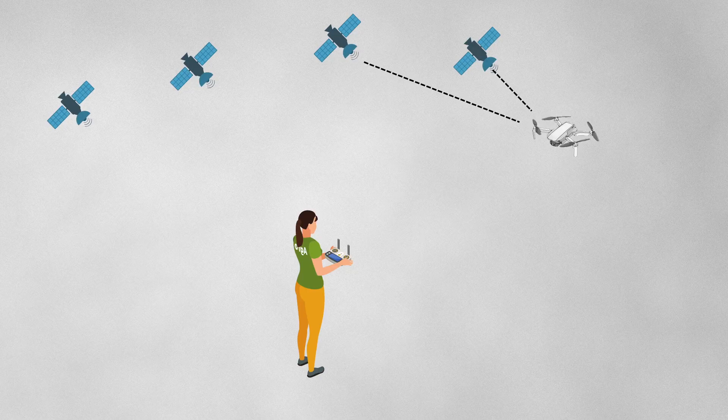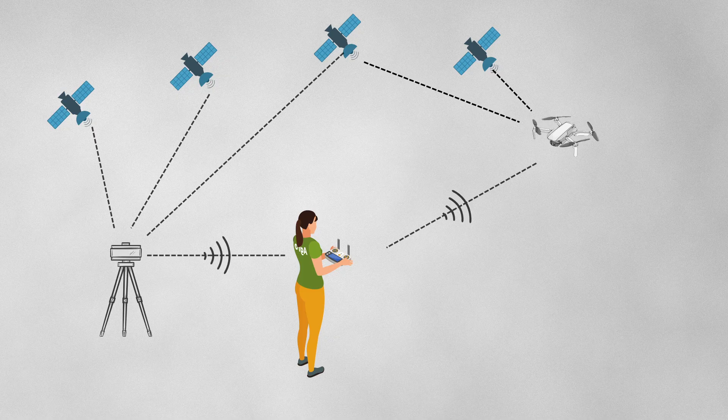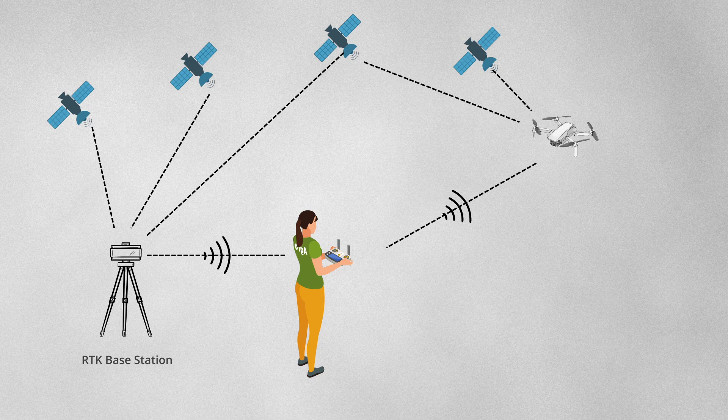Having an RTK module on the drone isn't really much help unless it's receiving correction data from somewhere. Often that's a base station, such as the DJI RTK module or DRTK, or a Emlid RS2 or something like that. However, base stations are expensive.